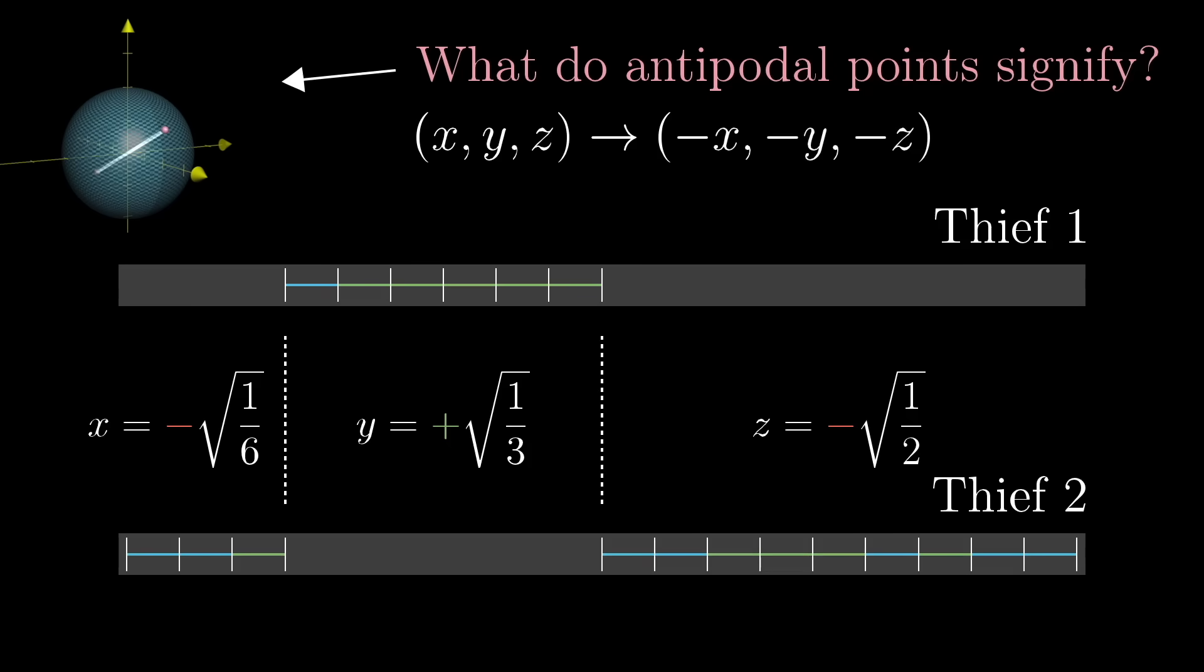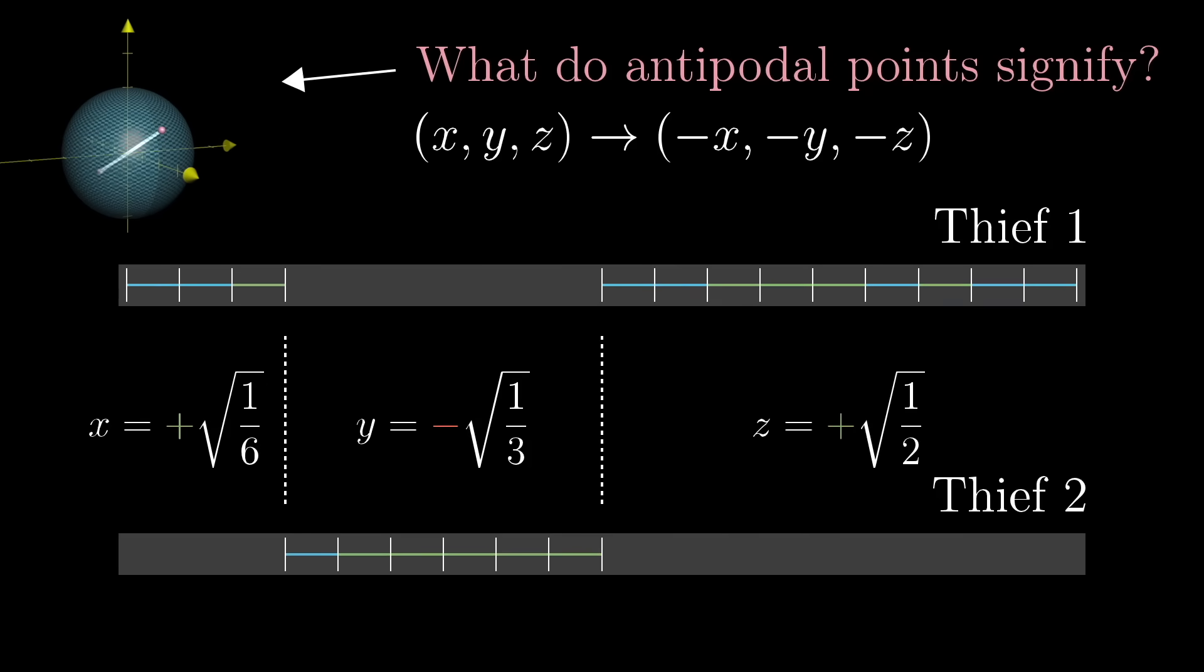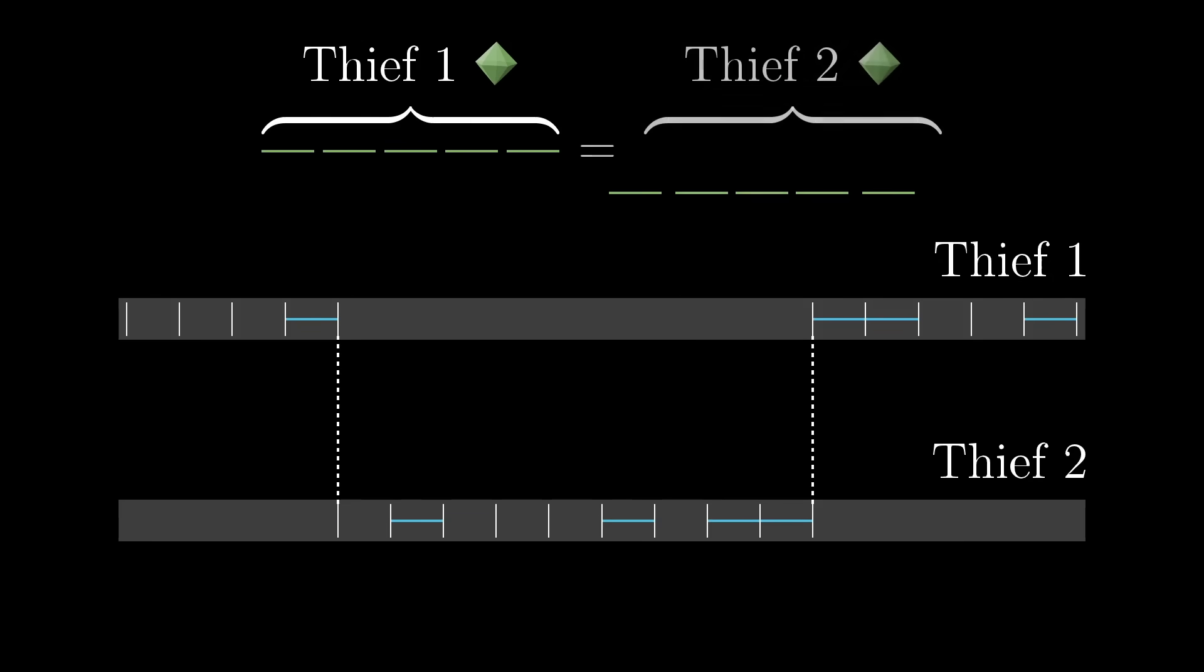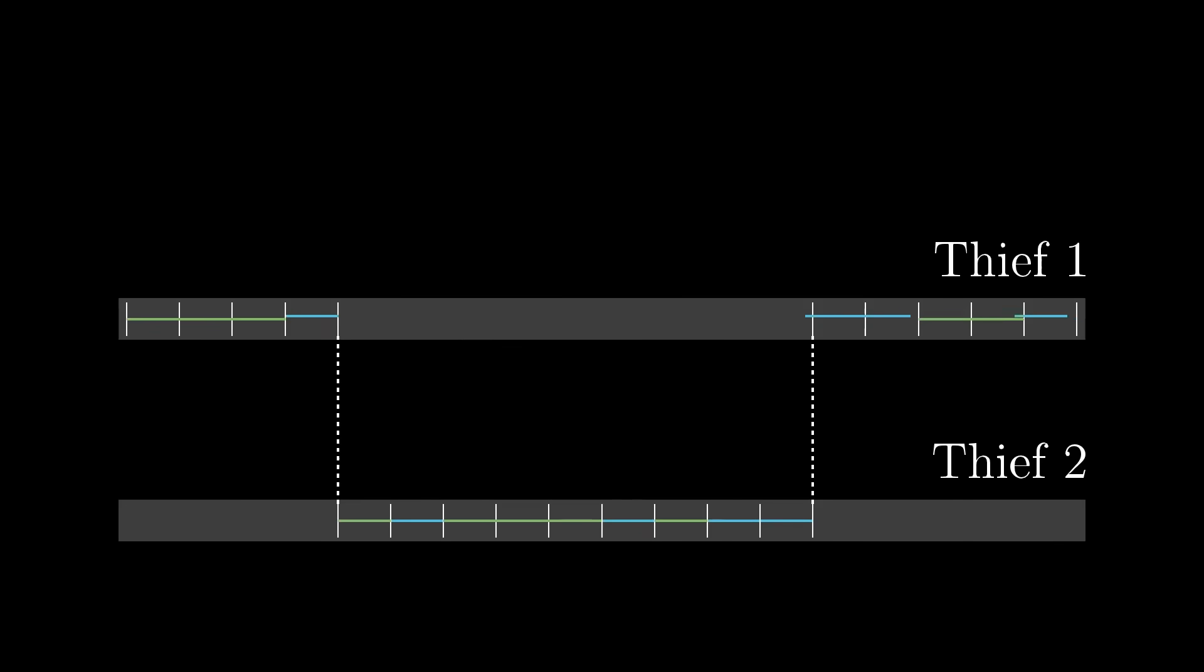Now remember what it is that we're actually looking for. We want the total length of each jewel type belonging to thief one to equal that for thief two. Or in other words, in a fair division, performing this antipodal swap doesn't change the amount of each jewel belonging to each thief.